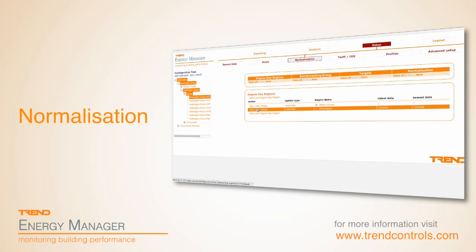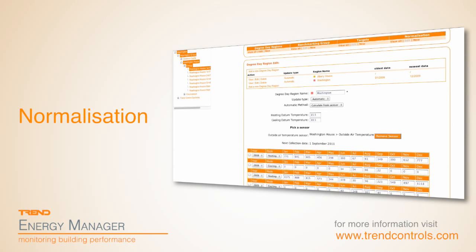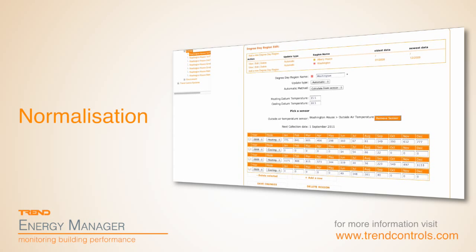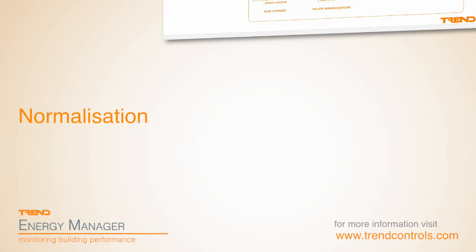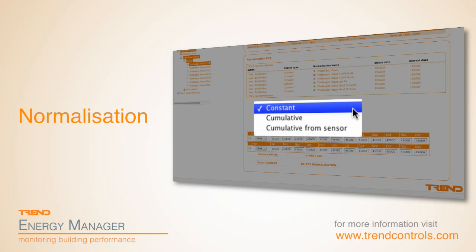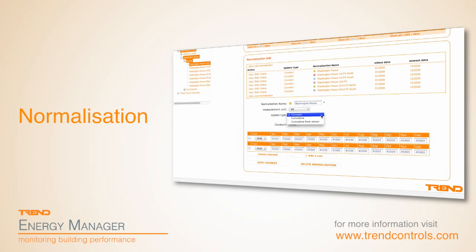Automatically calculate your degree days based on the outside temperature of the building or, if you prefer, manually enter the regional degree day data. In addition, points can be normalised against constant or variable values such as floor area or production output. This gives you the ability to compare point values on a like-for-like basis.